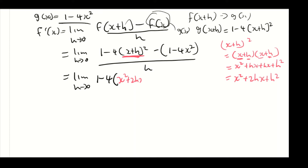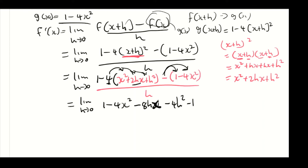Taking the limit as h approaches 0, the 4 multiplies everything inside the brackets: 1 minus 4x squared minus 8hx minus 4h squared. Then the minus sign distributes into (1 minus 4x squared): minus 1 plus 4x squared, divided by h. The 1 cancels with minus 1, and the 4x squared cancels with minus 4x squared, leaving minus 8hx minus 4h squared, all divided by h.